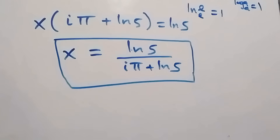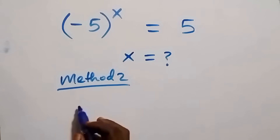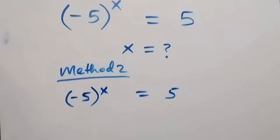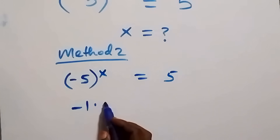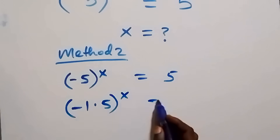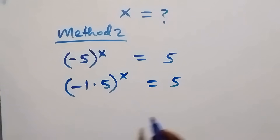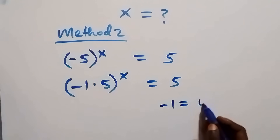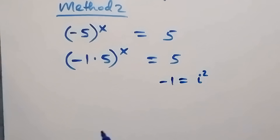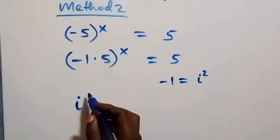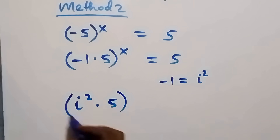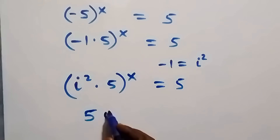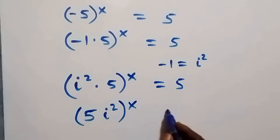For the second method, we use common logarithm. From minus five raised to power x equals five, we separate minus one: minus one times five raised to power x equals five. Note that minus one equals i squared (the imaginary number). So we write i squared times five raised to power x equals five, which is (5i²) raised to power x equals five.